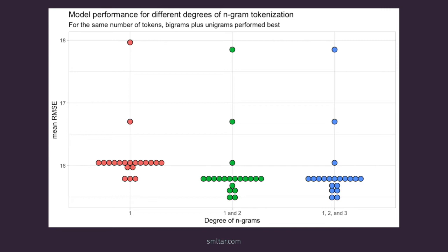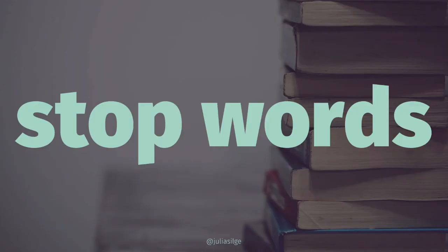The performance gain from going from unigrams to unigrams plus bigrams is significant. But when we add in the trigrams, it doesn't change the situation as much. Keep in mind that adding in n-grams is computationally quite expensive — using bigrams plus unigrams takes more than twice as long to preprocess and train than unigrams alone, and if we add in trigrams as well, we are up to five times as long to preprocess and train.